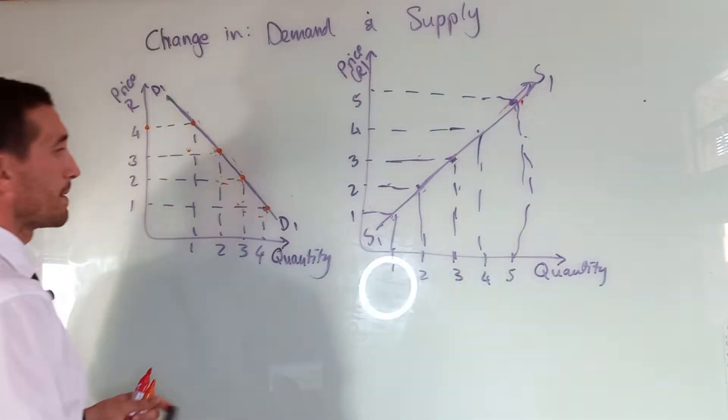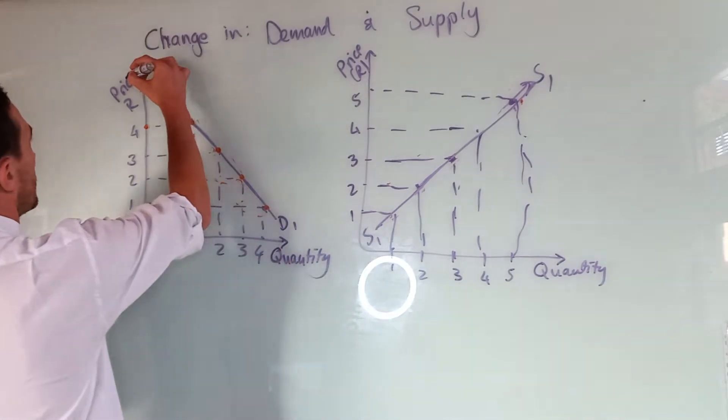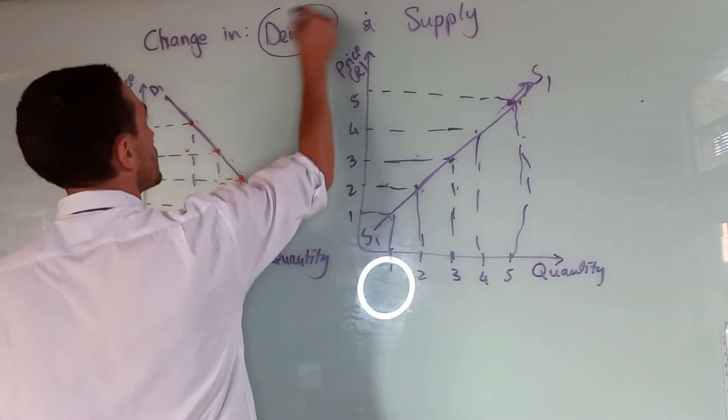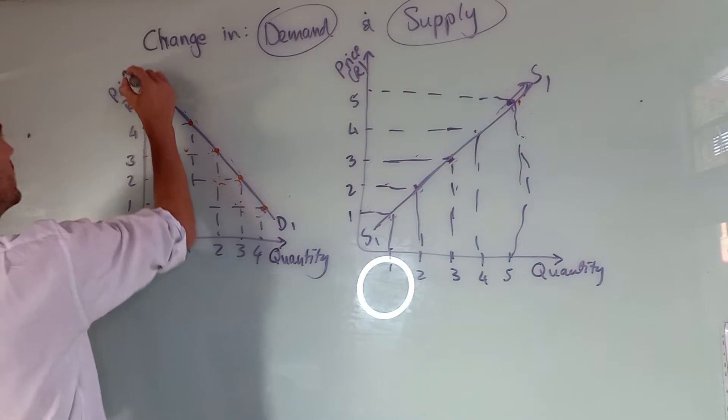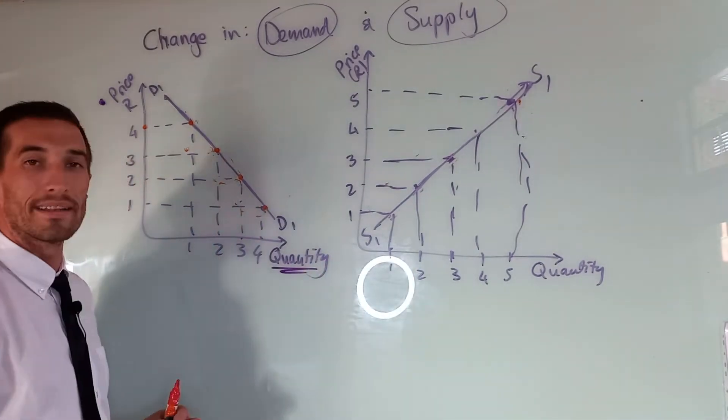When we look at the demand and supply graph, it's always important to remember how to draw it. It's always about the relationship in demand and supply between two elements, which is price and quantity.